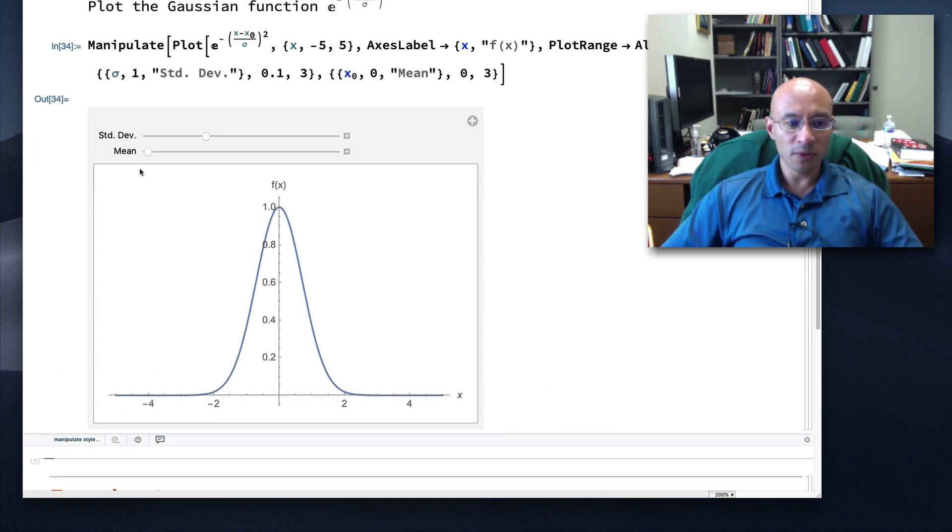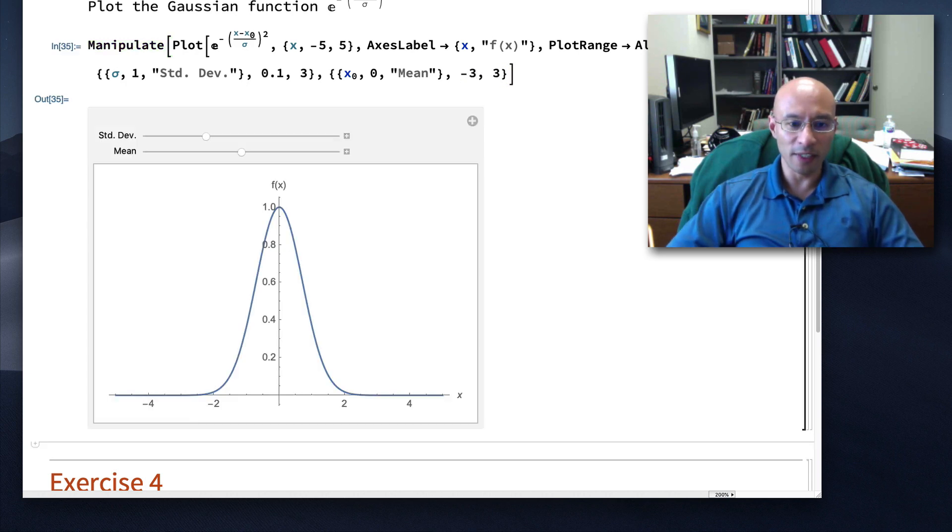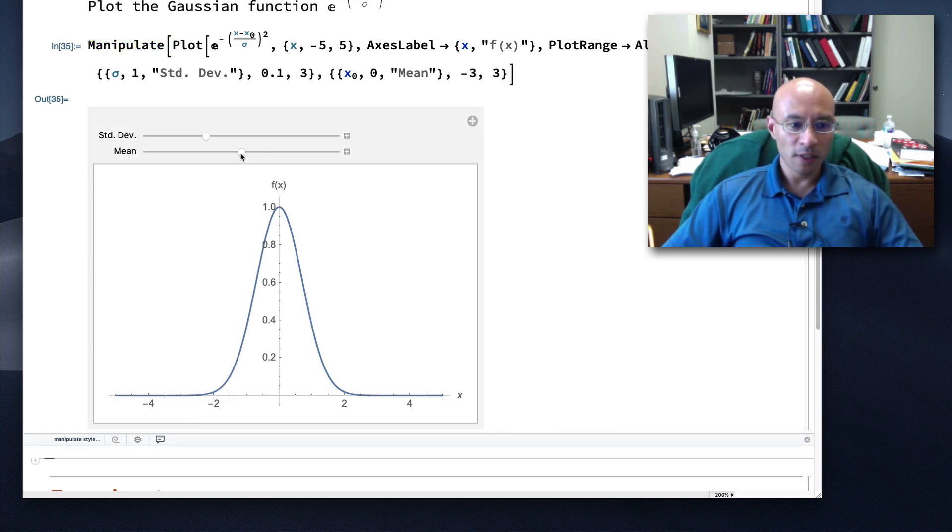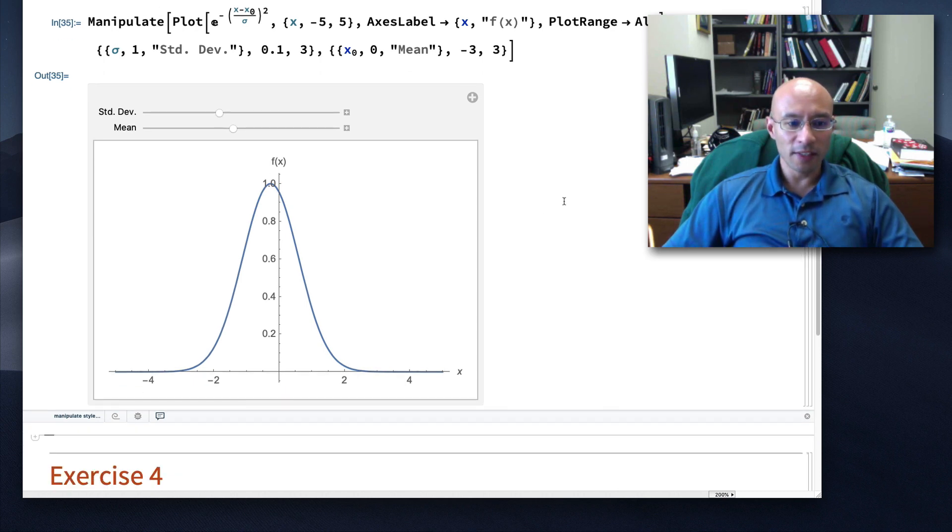One controls the mean, so watch what happens. Now the Gaussian shifts right as the mean increases. I take that back. I guess the mean doesn't have to be positive. Let's make it go from negative 3 to 3. And now I have control. I can slide it left or right. And the standard deviation makes the Gaussian wider or narrower. Okay, so there's our exercise 3.